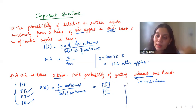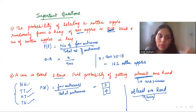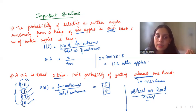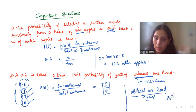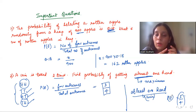At least one head means minimum one head — it can be one or more than one. So you would count HH, HT, and TH. At most means maximum — it can be zero or one. Many students get confused between at most and at least, so please be clear. You majorly have one question on this — at most or at least.